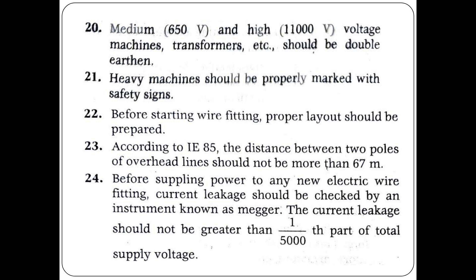Medium voltage (650V) and high voltage (11,000V) machines, transformers, etc. should be double earthed. Heavy machines should be properly marked. Before starting wire fitting, a proper layout should be prepared. According to IE rules, the distance between two poles of overhead lines should be more than 67 meters.